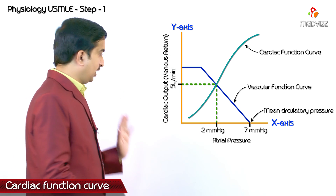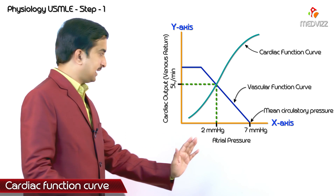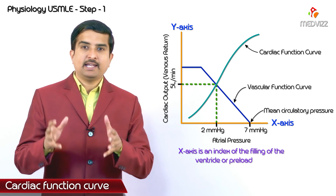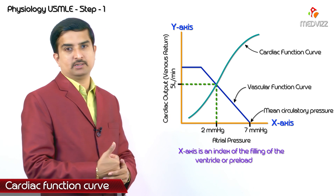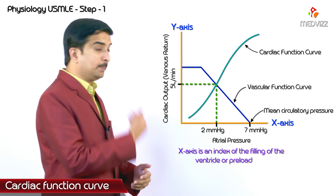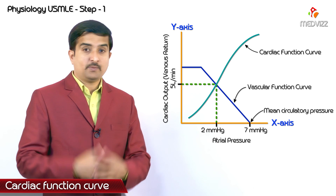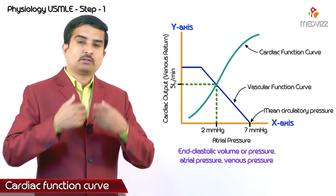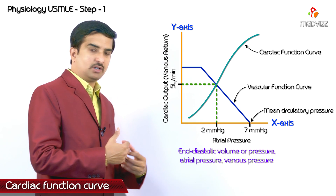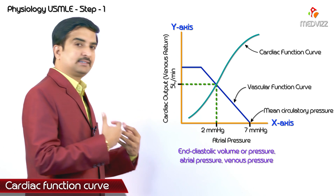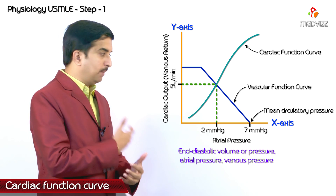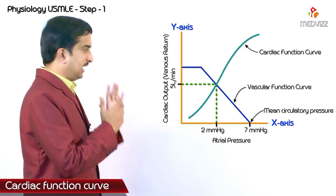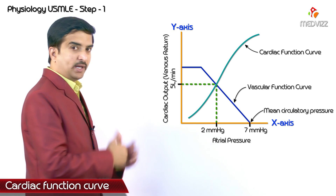The x-axis is an index of the filling of the ventricle, or preload. This includes end-diastolic volume, end-diastolic pressure, atrial pressure, and venous pressure — all of these can be calculated by means of the x-axis. So that is what the x-axis as well as the y-axis represent in this graph.